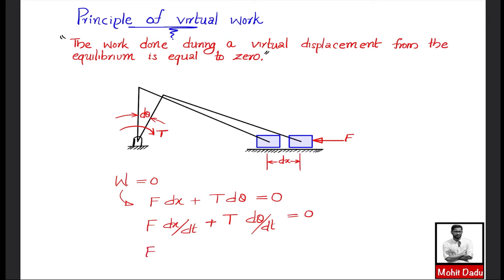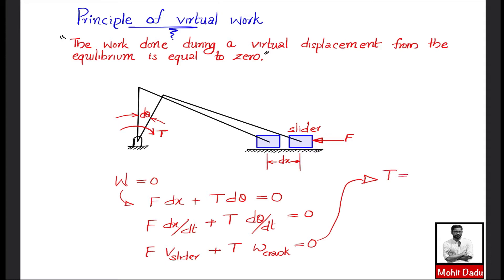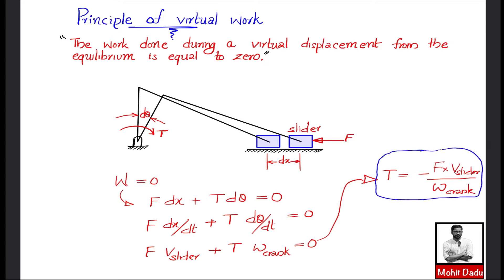Here, dx/dt is the velocity of the slider, and dθ/dt is the rate of change of angular displacement of the crank, which is its angular velocity ω. The equation becomes: F·v_slider + T·ω_crank = 0. Solving for the equilibrium torque: T = −F·v_slider / ω_crank.